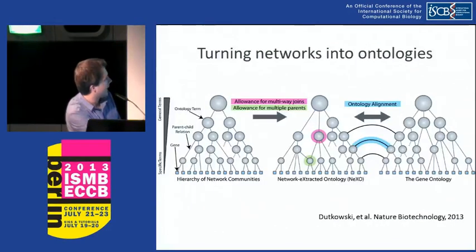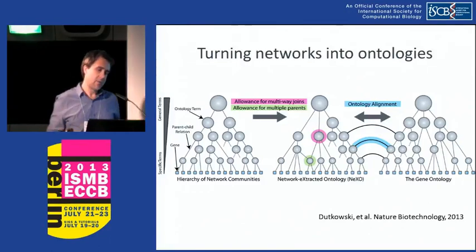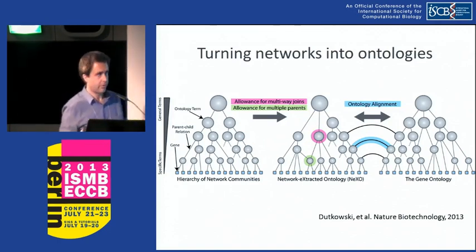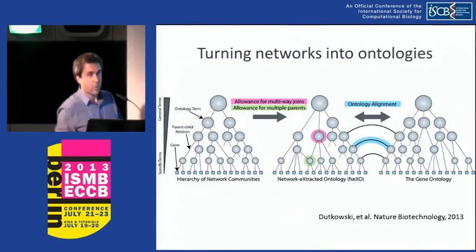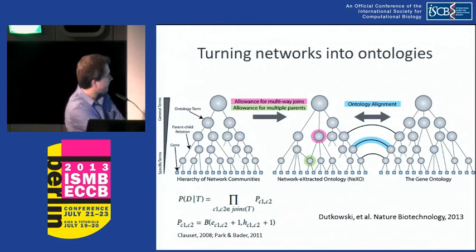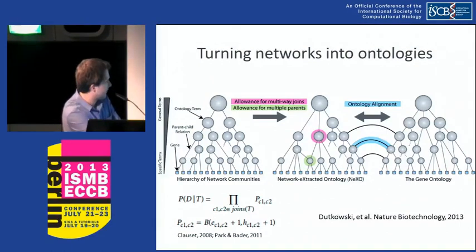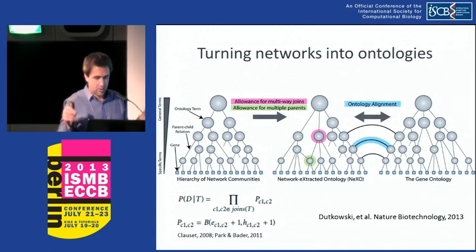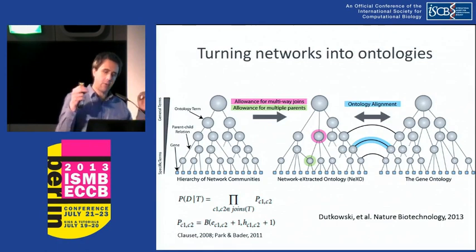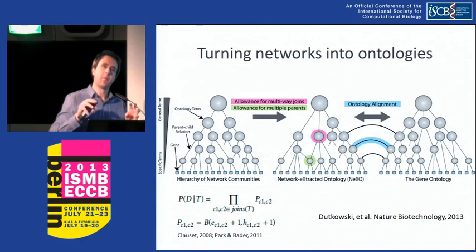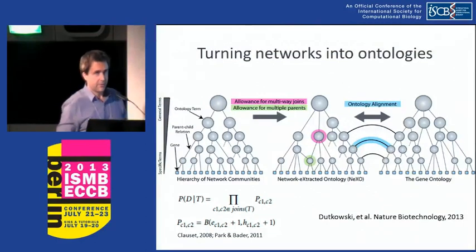Having established that, we went ahead and constructed a framework to extract hierarchical structures from data and align them to the Gene Ontology to see where they agree and where they differ. This framework starts with an established method for clustering networks — a probabilistic model first proposed by Clauset et al. in Nature 2008 and with significant contributions by Pike, Park, and Bader in 2011. It's a probabilistic clustering algorithm that iteratively merges nodes, looking at interactions that fall between nodes that are connected, but also how edges fall outside — connecting things with many edges to themselves but also similar patterns of interactions to the outside world.